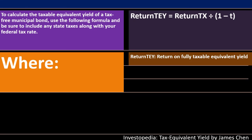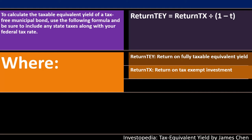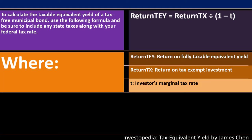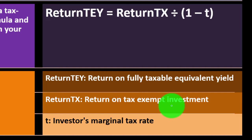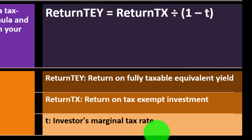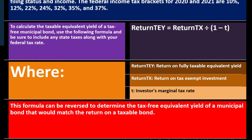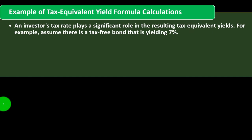To calculate the taxable equivalent yield of a tax-free municipal bond, use the following formula, and be sure to include any state tax along with your federal tax rate. The formula is: Return(TEY) = Return(TX) ÷ (1 − Tax Rate), where Return(TEY) is the return on the fully taxable equivalent yield, Return(TX) is the return on the tax-exempt investment, and T is the investor's marginal tax rate. This formula can also be reversed to determine the tax-free equivalent yield of a municipal bond that would match the return on a taxable bond.